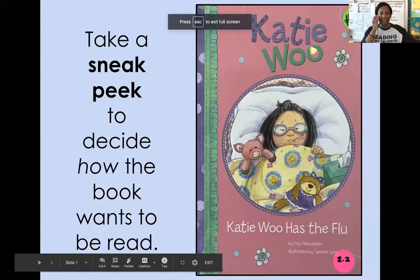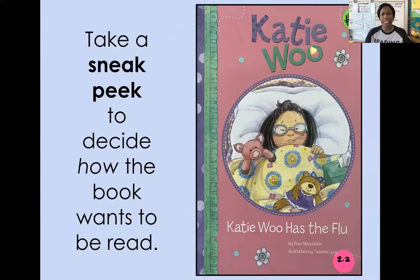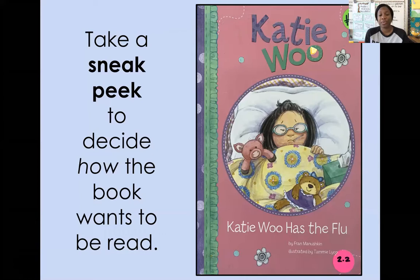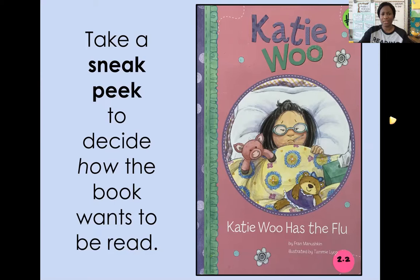We're going to take a big second grade sneak peek and we're going to decide how the book wants to be read. When we're taking our sneak peeks, we know we look on the front cover. So let's look at that cover and study — see if there's anything on this page helping us decide how to read the book. The book is called 'Katie Wu Has the Flu.' Looking at her face, she's in the bed with a thermometer in her mouth. Her face is kind of scrunched together, so she looks like she's not feeling very good at all. So I'm thinking we might want to read this in a serious voice — she's kind of worried because she's sick.